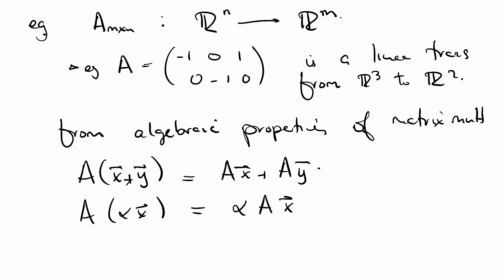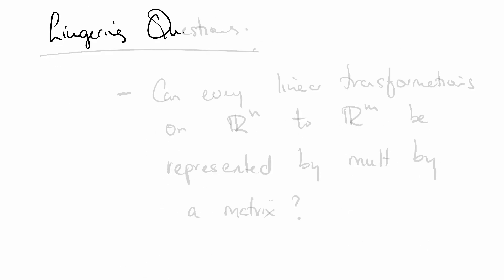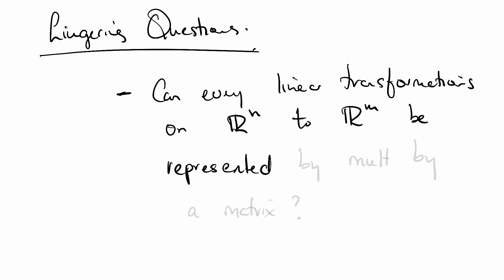Of course, you'll have some lingering questions, possibly the same question that we had last time. Can every linear transformation, every linear transformation on Rn to some Rm, be represented by multiplication by a matrix? We'll talk about this next time. For now, think on this. See you in the next class.